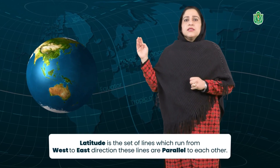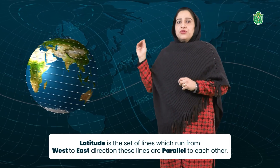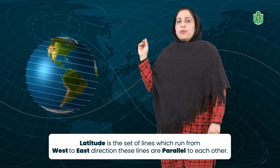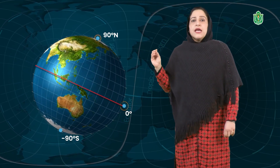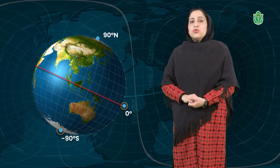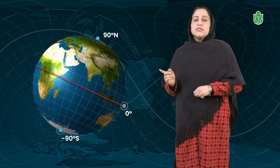Now we will discuss latitudes in detail. A latitude is the set of imaginary lines which run from west to east direction. These lines are parallel to each other. The equator is an important latitude which is at 0 degrees — it is the central parallel. These imaginary lines are all parallel to the equator, meaning they don't meet anywhere. We can say the latitude of a place is the angular distance of a place north or south of the equator.